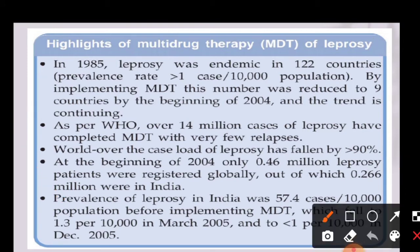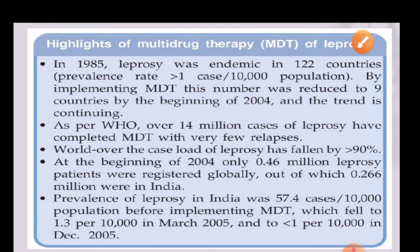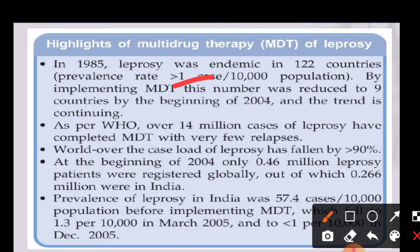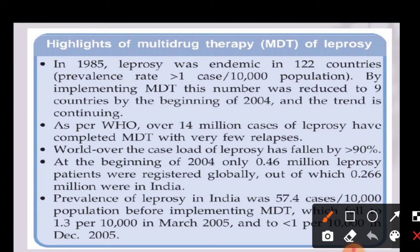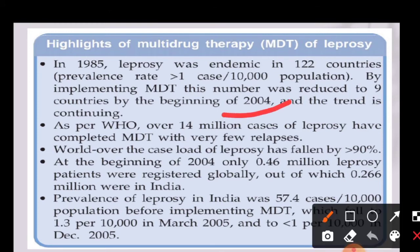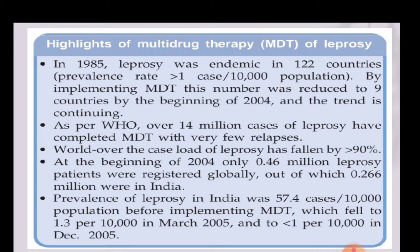From this table, we can observe how multi-drug therapy has been effective in treating leprosy. In 1985, leprosy was spread across 122 countries, with more than one case per 10,000 population in most of them. By implementing multi-drug therapy, this number was significantly reduced — from 122 countries affected, it came down to just nine countries by a 2004 survey.